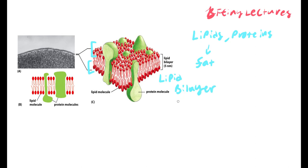Lipid means fat. 'Bi' means two, and there are layers, so that means two layers of fat. Between these sandwiches of lipids are proteins. These protein molecules can act as channels and let things in, or they can allow the surface of a cell to stick to other cells — they do a bunch of different things. We'll go over what those proteins do in a bit.